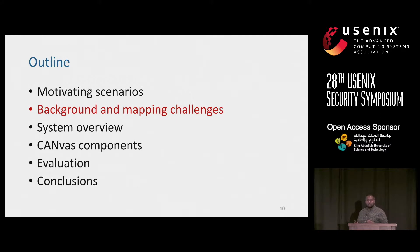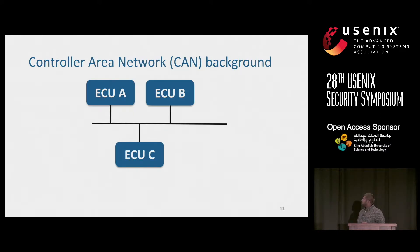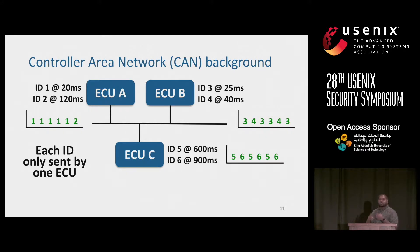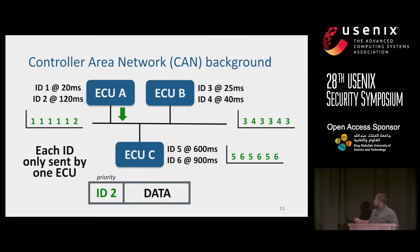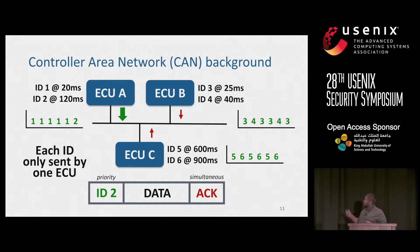I'll give you some background about the protocol cars use and some challenges in mapping. The de facto standard for the internal automotive network is the Controller Area Network, or CAN protocol. A CAN bus has each ECU responsible for sending a set of IDs — labels for the data an ECU is transmitting. Only the automaker knows the actual purpose of each ID. Each ID is sent periodically and only by a single ECU in the network. After a message is sent, it is acknowledged simultaneously by the receiving ECUs.